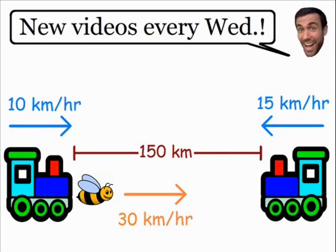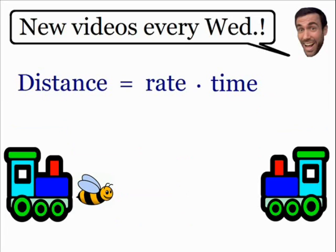So how far is this bee going to travel before it becomes Buzzkill? The simplest and easiest solution is the best solution, so let's solve this using basic algebra. The only formula we need to solve this problem is the distance formula: distance is equal to rate multiplied by time.